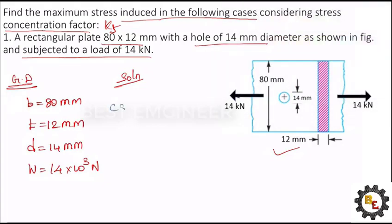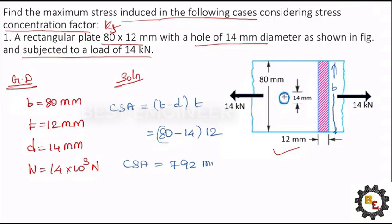Now let's find the cross-sectional area which restricts the load. Cross-section area equals B minus D into T. This is B, and here some portion is not carrying the load, so minus D into T. B is 80 minus D is 14, thickness is 12. So the cross-section area is equal to 792 millimeter square.